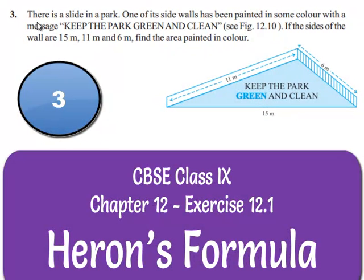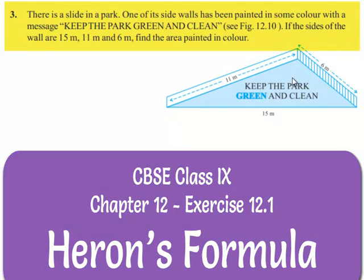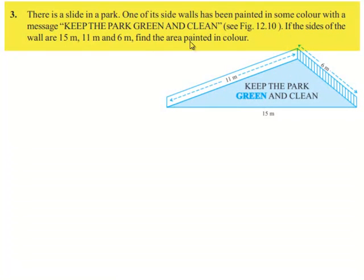Let us move on to the third question. There is a slide in a park. One of its side walls has been painted in some color with a message, 'Keep the park green and clean,' as shown in the figure. If the sides of the walls are 15 meters, 11 meters, and 6 meters as given in the figure, find the area painted in color.